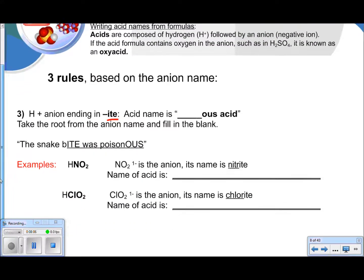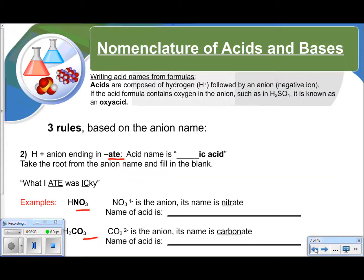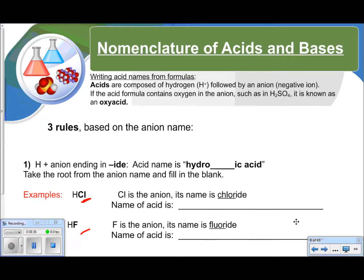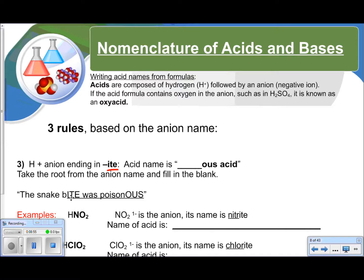My third rule for naming acids. The snake bite was poisonous. So if you've got hydrogen and an anion ending in '-ite,' the acid name is blank '-ous acid.' So we've got HNO2, which is nitrite. So this becomes nitrous acid. And we have ClO2, which is chlorite. So this becomes chlorous acid. So as a little recap, your hydroacids are just hydrogen and then another element. What I ate was icky. So any polyatomic ion ending in '-ate,' changes to '-ic.' And then the snake bite was poisonous. So any polyatomic ion ending in '-ite,' changes to '-ous,' with acid.